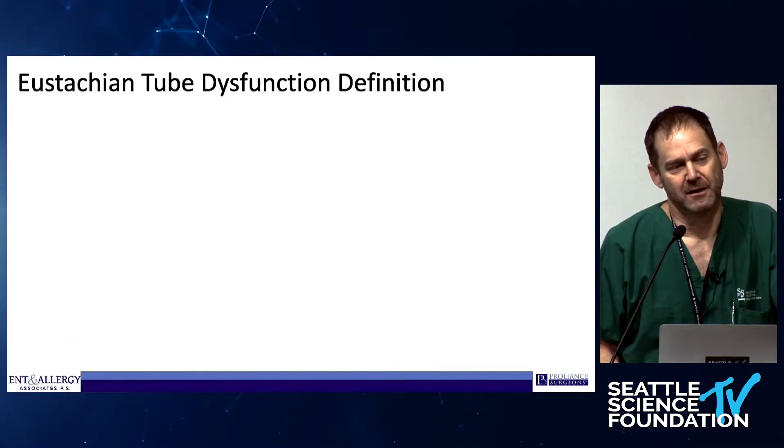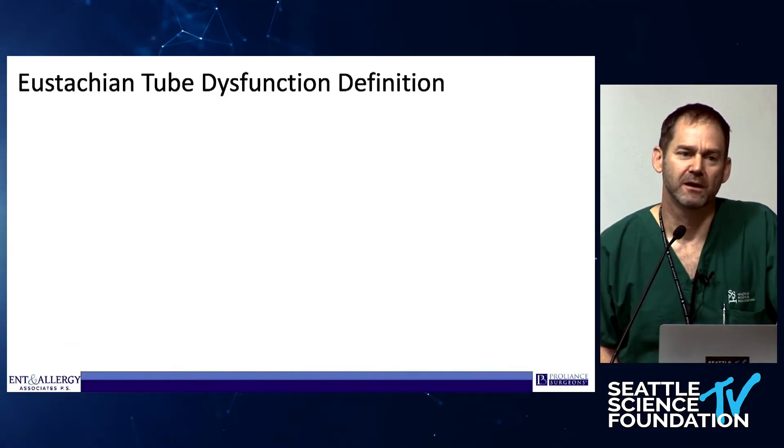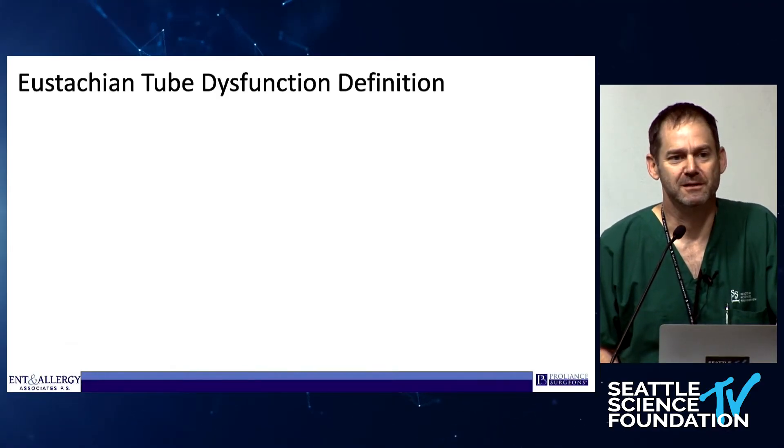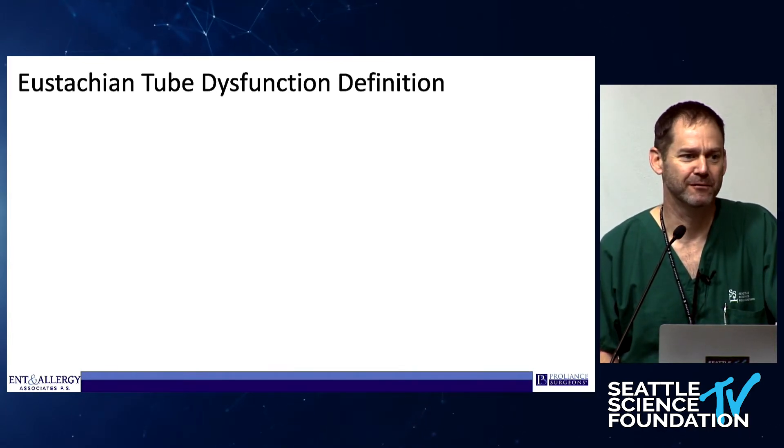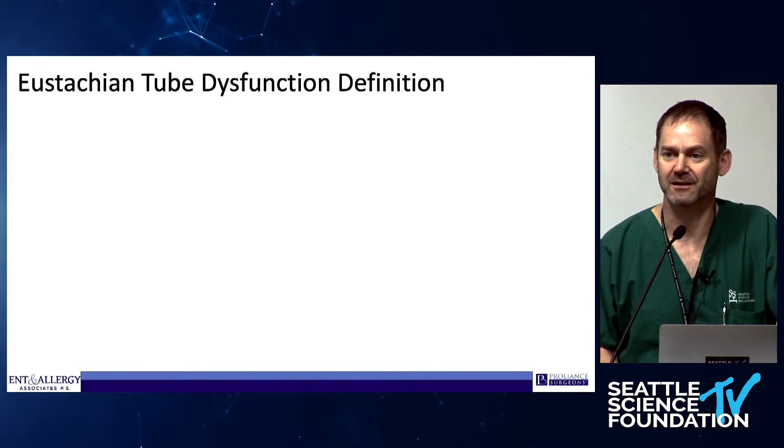I wanted to start off talking about eustachian tube dilation. Who in the room has done a balloon dilation of the eustachian tube? So it's probably the easiest one we have because you can see right where you're going. You don't need navigation, you don't need a light pipe — it just falls right in. The hardest part about balloon dilation of the eustachian tube is getting the patient approved for surgery. Even though we have a CPT code now for balloon dilation, it's a challenge.